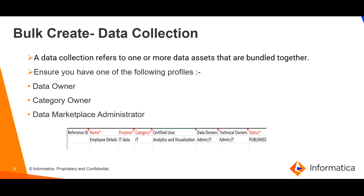Next, bulk create data collections in CDMP. The following is the list of columns used for bulk import of data collections using the data marketplace data collection template. Let us discuss each column one by one. First, reference ID — this is the unique reference identifier of the data collection. Kindly refer the guide for the guidelines on values to be mentioned for the reference ID. If the reference ID column is blank, it will be auto-generated. Next, name — this is the name of the data collection to be created.